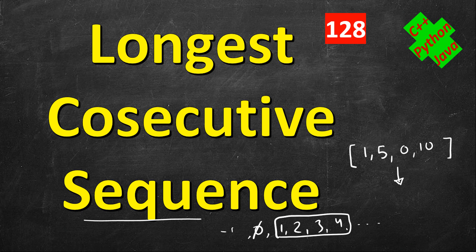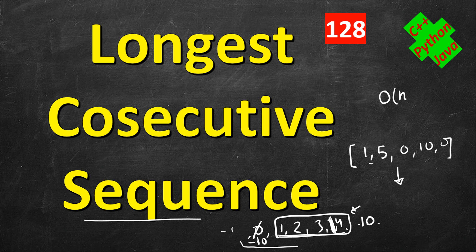For example, if we have minus 10, that is not part of the sequence because after minus 10 it should be minus 9, not 1. And if we have 10, the sequence breaks after 4. So that is the longest sequence. Also note: if you have 3, 3, 4 you do not count duplicates. One requirement of this problem is that you must solve it in O(n).